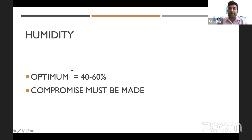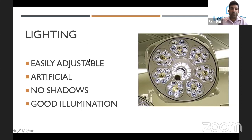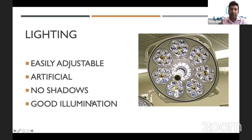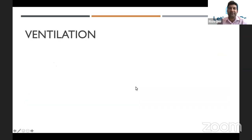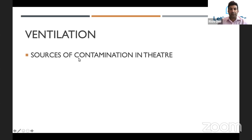So it does create problems if temperatures are high in theatre. Regarding humidity — the optimum humidity is about 40 to 60 percent, but if you've got increased humidity you'll decrease the cement working time, so you have to make a compromise there as well. We can control lighting — we want lighting which is easily adjustable by the surgeon, some sort of artificial lighting that gives excellent illumination at the incision site, doesn't create shadows, and we want at least 40,000 lux. That's the buzzword for really good lighting at the operation site.